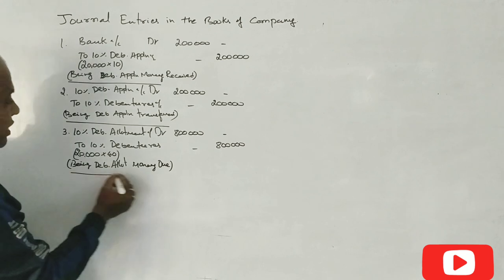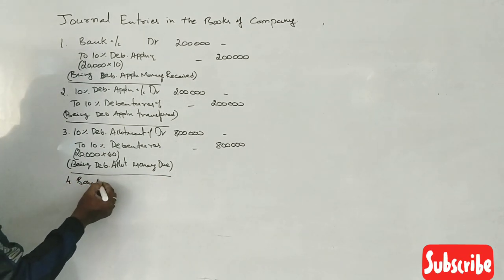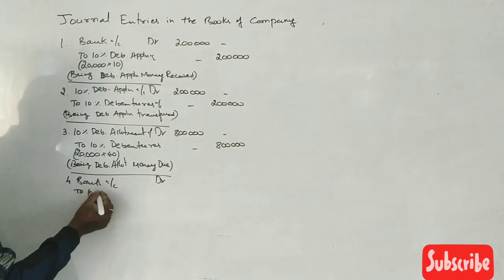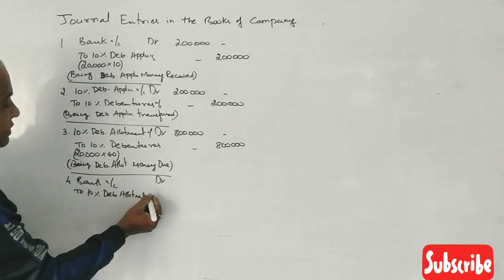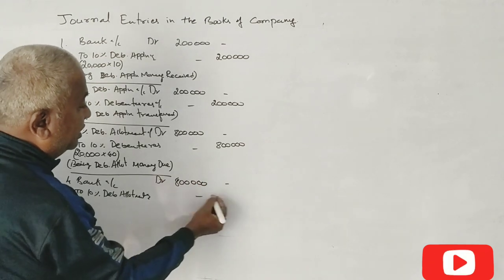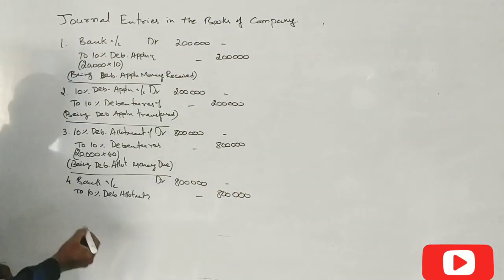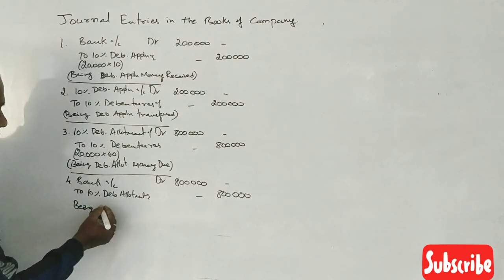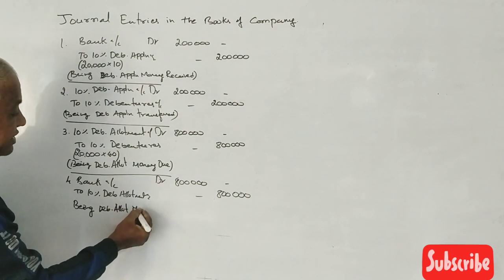Due, you have money received. Bank account debit to 10 percent debenture allotment account. Same amount, 8 lakhs. Being debenture allotment money received.